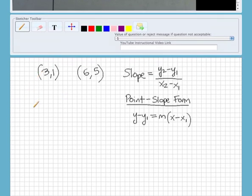First thing we're going to do is find the slope using our equation y2 minus y1 over x2 minus x1. I'm going to label this x1, y1, x2, y2. So we're going to do 5 minus 1 over 6 minus 3, which gives you 4 thirds.